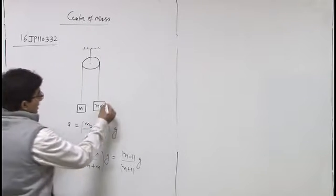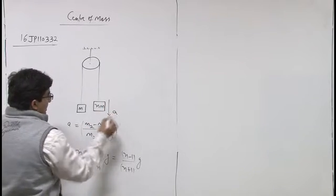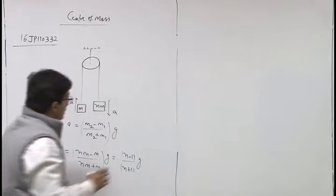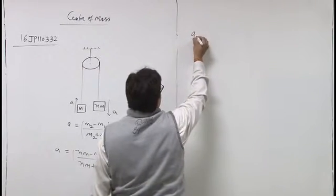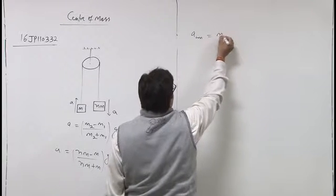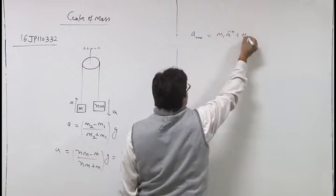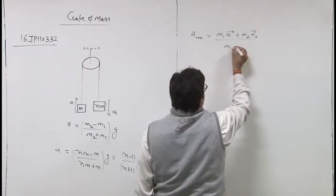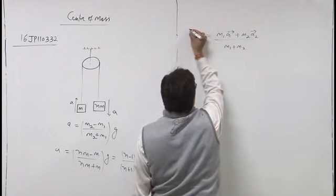Now, acceleration of center of mass. This block is moving downward with an acceleration a and this block is moving upward with the same acceleration a. Acceleration of center of mass a_cm equals m1 a1 plus m2 a2 divided by m1 plus m2. This is in vector form.